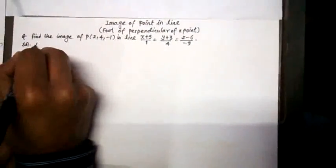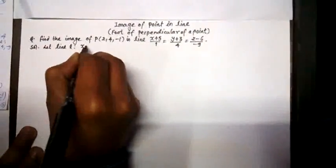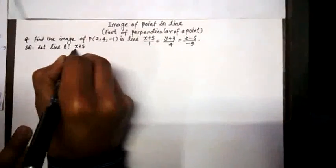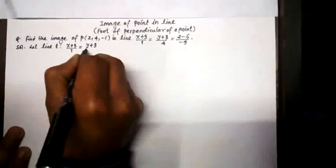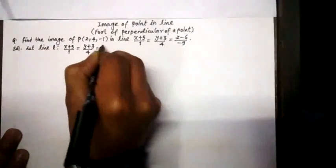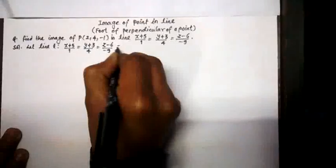We will assume the line as, let line L is given as (x+5)/1 = (y+3)/4 = (z-6)/(-9) and we will call it λ.